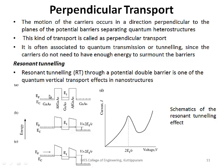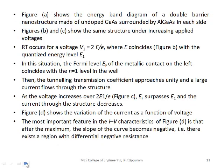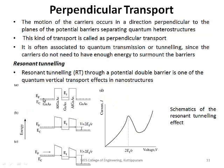Resonant tunneling occurs at a voltage of 2E1/e. If the Fermi level of the metallic contact EF coincides with the energy level of the quantum well, we get maximum current flow. At that time, the transmission coefficient is unity. This occurs when the voltage is 2E1/e.